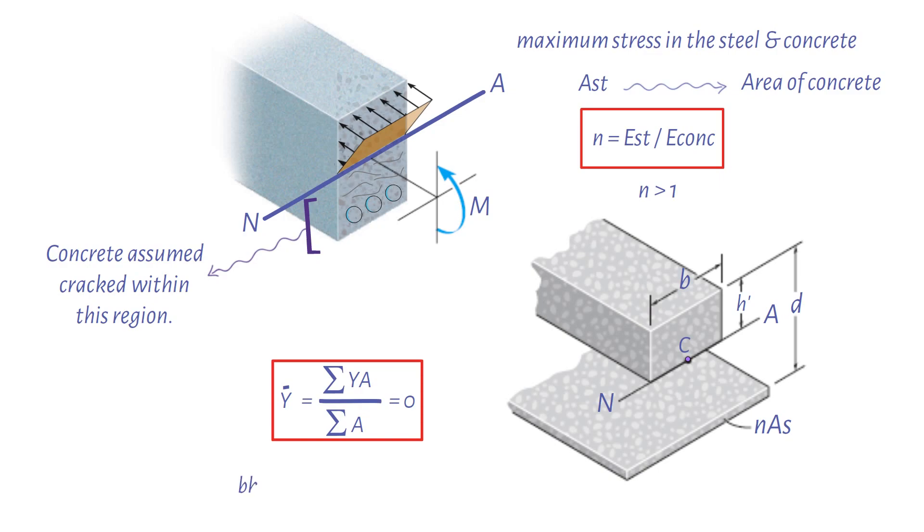Thus, B times H' times half H' minus N times the area of steel times D minus H' equals zero. Once H' is obtained from this quadratic equation, the solution proceeds in the usual manner for obtaining the stress in the beam.